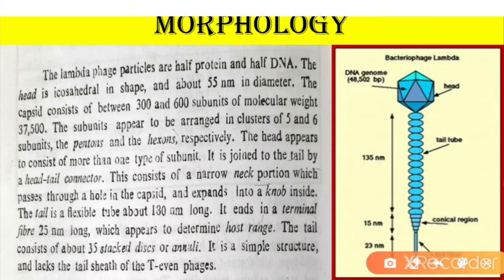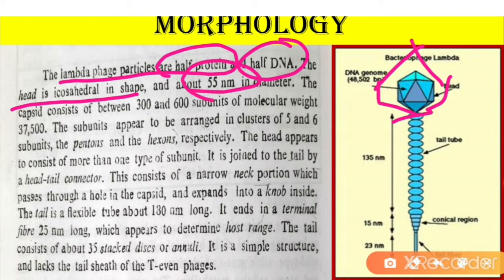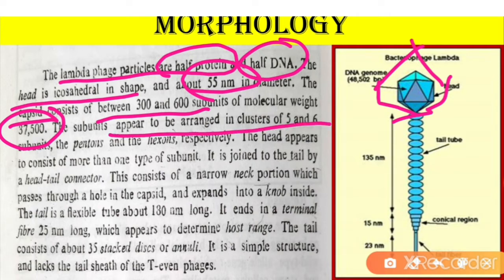The lambda phage particles are half protein and half DNA. The head is icosahedral in shape, about 55 nanometers in diameter. They consist of capsids made up of 300 to 600 subunits with a molecular weight of 37,500. The subunits appear to be arranged in cluster form — five is known as pentone and six is known as hexone. The head appears to consist of more than one type of subunit.